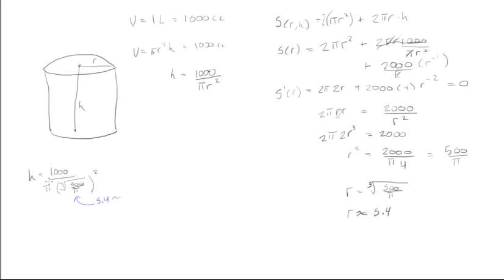When you type this into your calculator—π times the cube root of 500/π squared, then 1000 divided by all that—you get the height is roughly 10.8 centimeters.